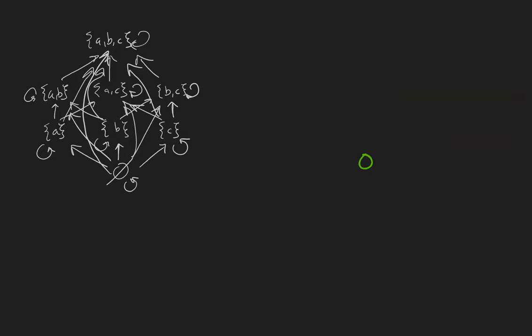We'll put the empty set on the bottom. Above it are the singleton sets. Above those are the sets with two elements. And on the top is the universal set.